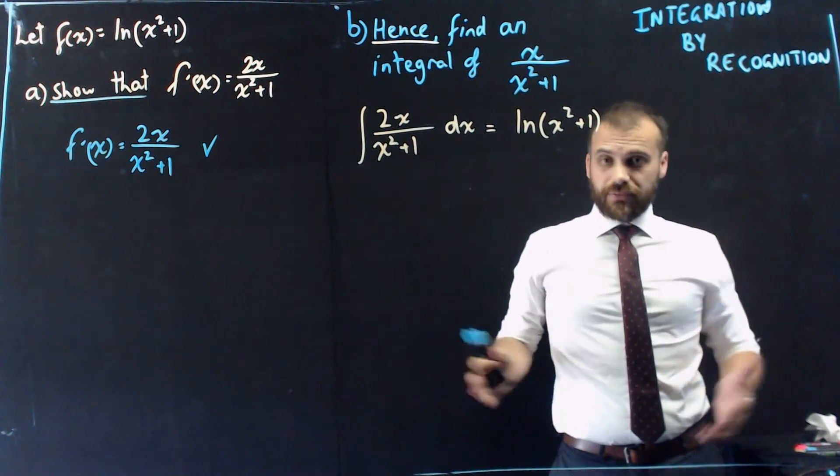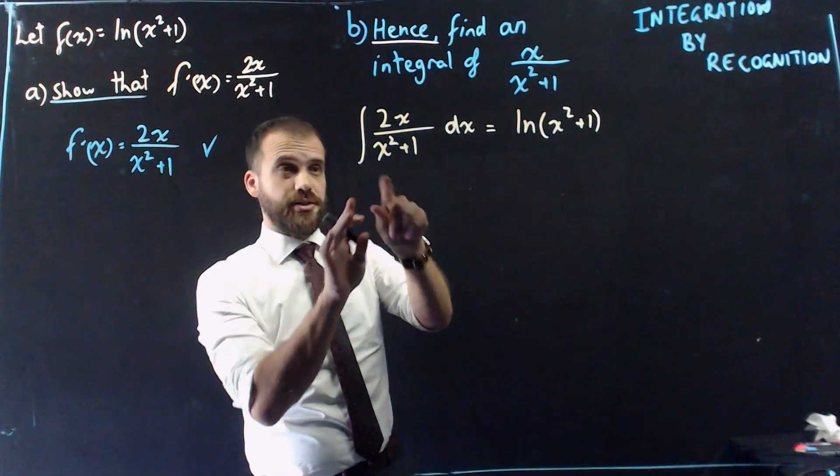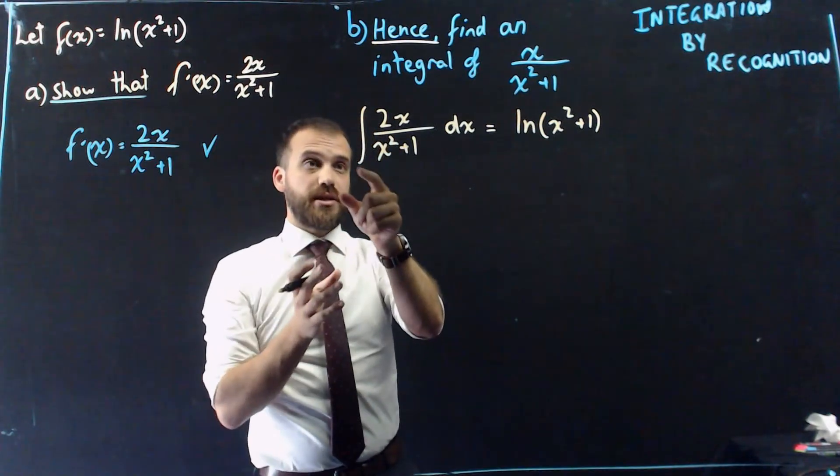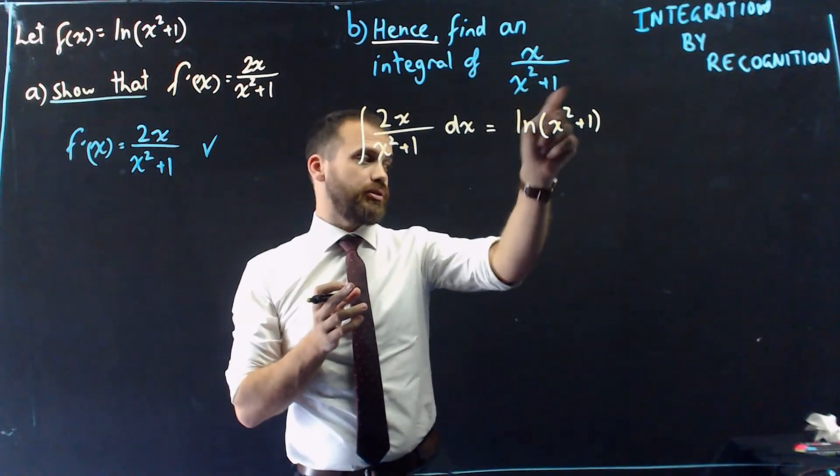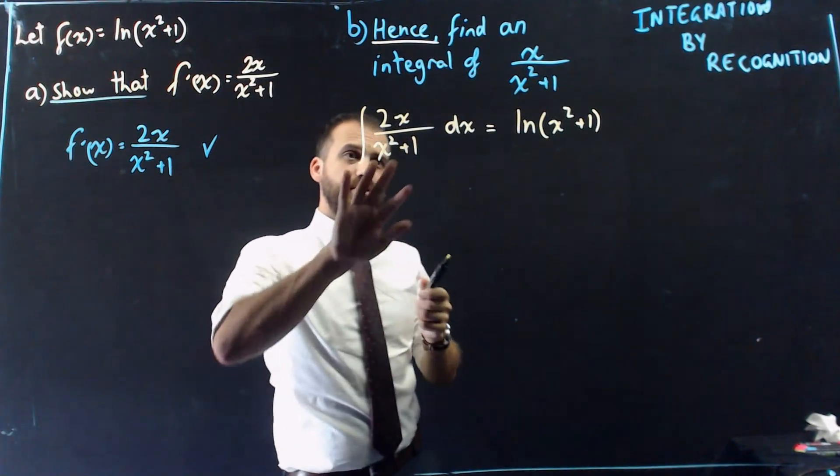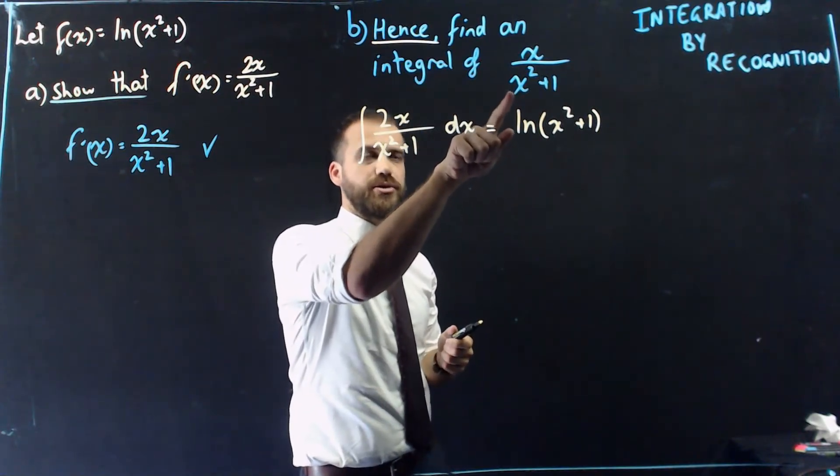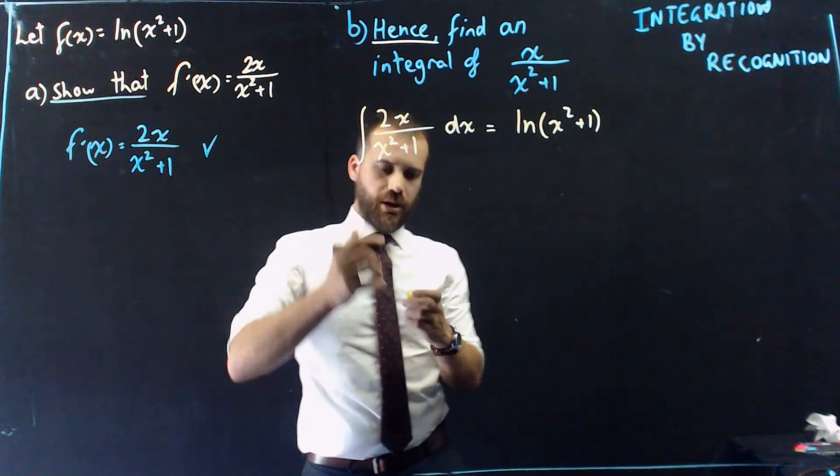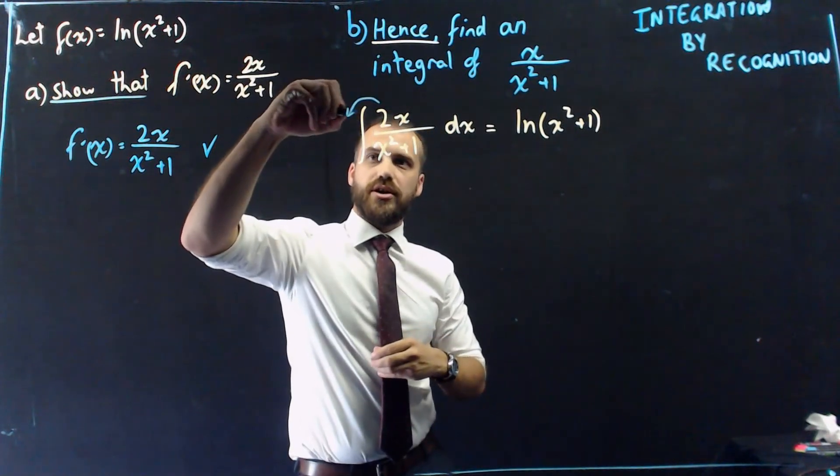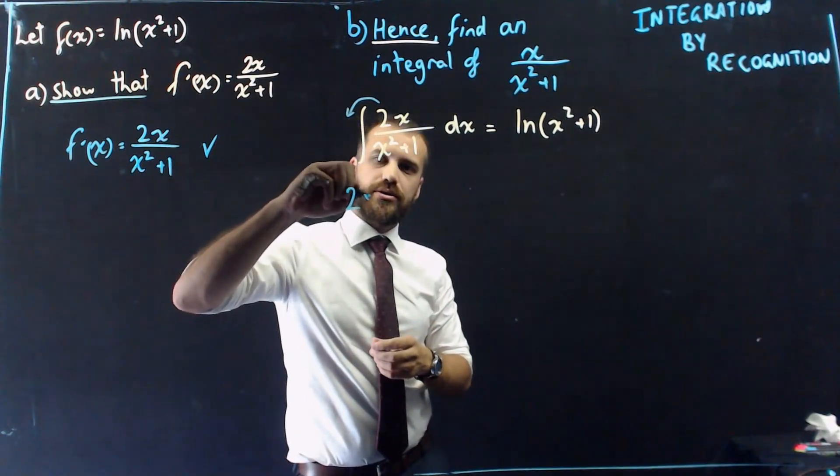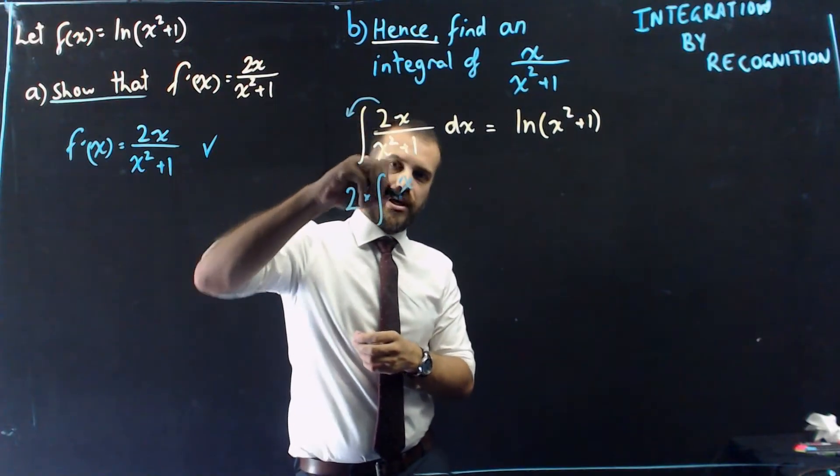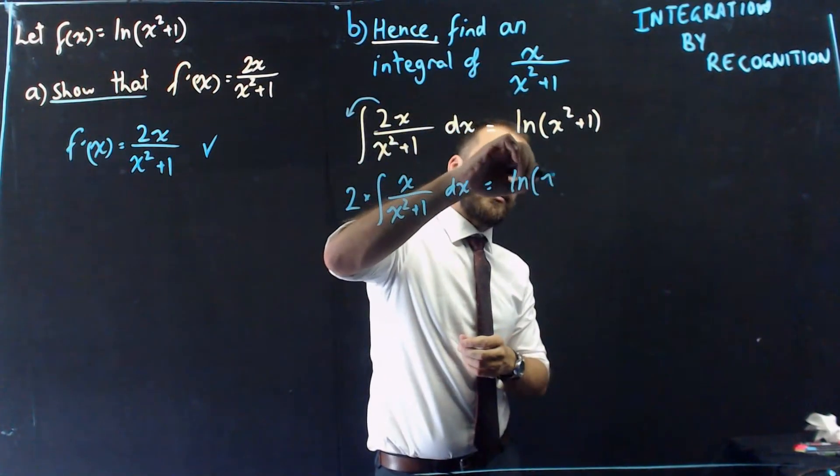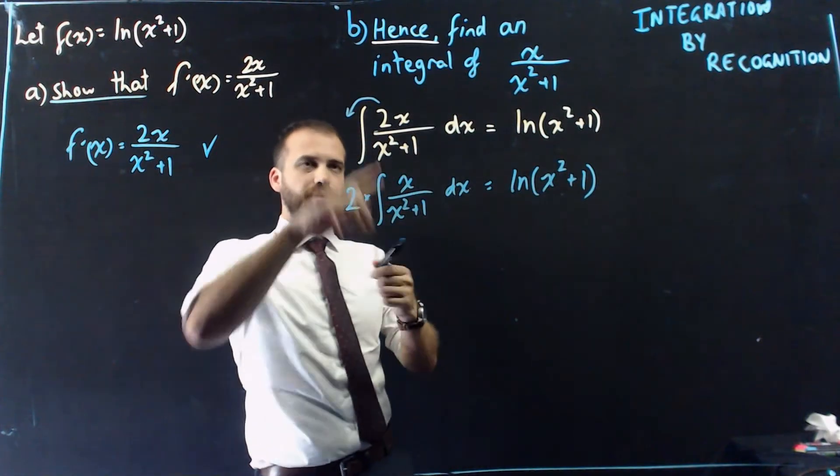Okay, and now is where you have to start thinking. This is really the first time you've got to start actually thinking about what you're doing. So what I've written here is that the integral of 2x on x squared plus 1 is equal to that. But part B doesn't ask me to find the integral of that. It asks me to find the integral of that. So ask yourself the question: how can I make this integral look like the integral I'm actually supposed to be finding? If I got rid of that 2, I'd be in business. So I'm going to take that 2 and move it outside of the integral. So now I have 2 times the integral of, and when that 2 comes out, I'm left with just x over x squared plus 1 with respect to x, is equal to ln x squared plus 1. So I didn't really do anything. I've just brought the 2 outside of the integral.